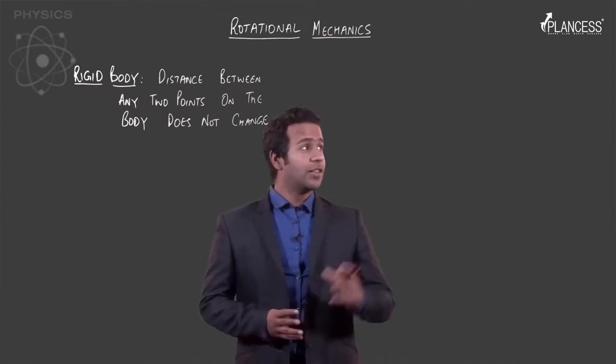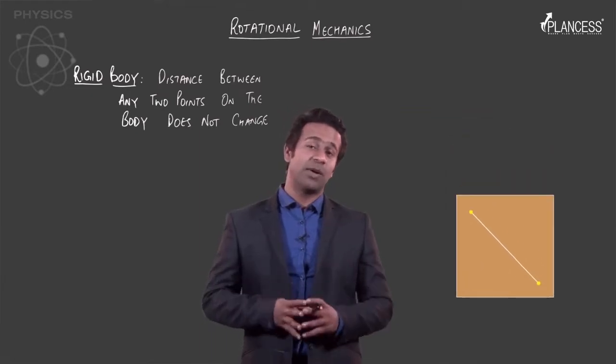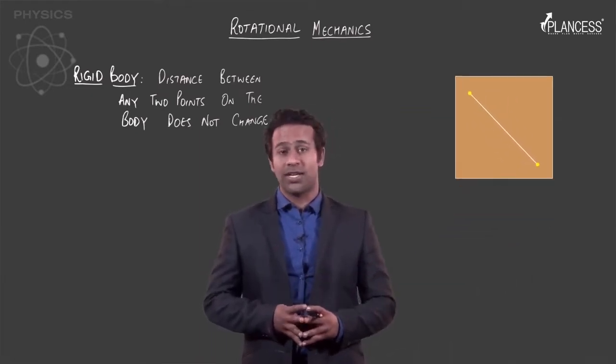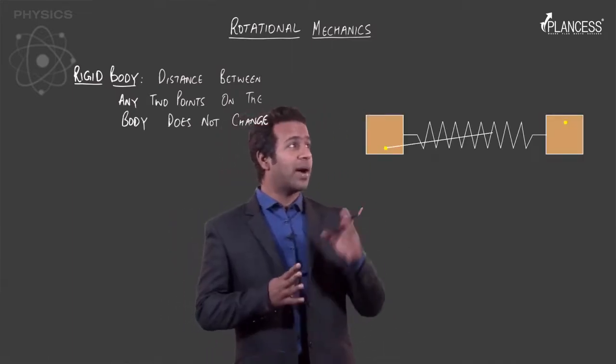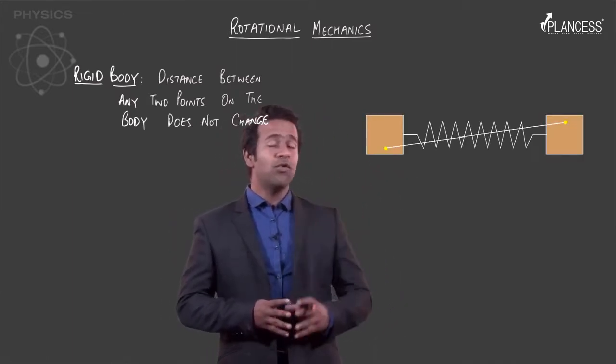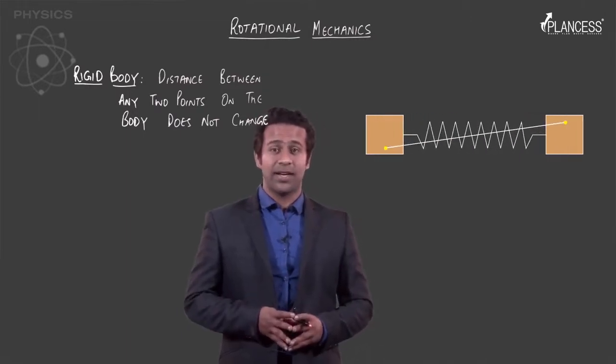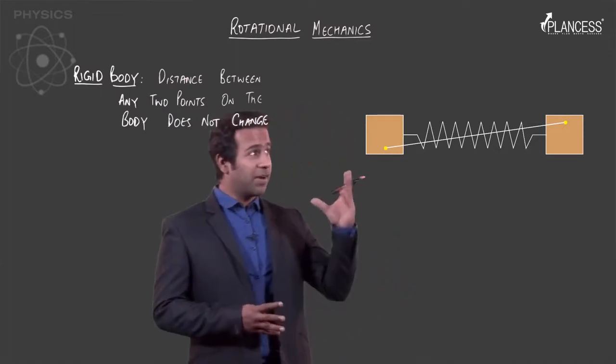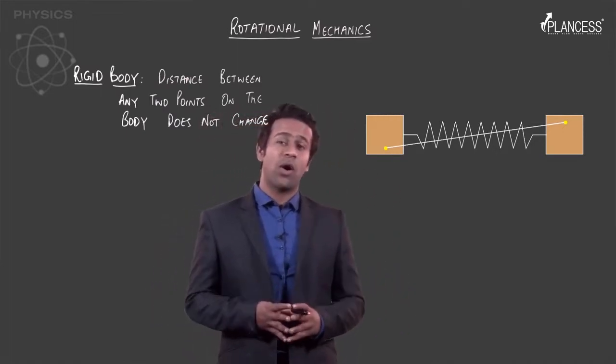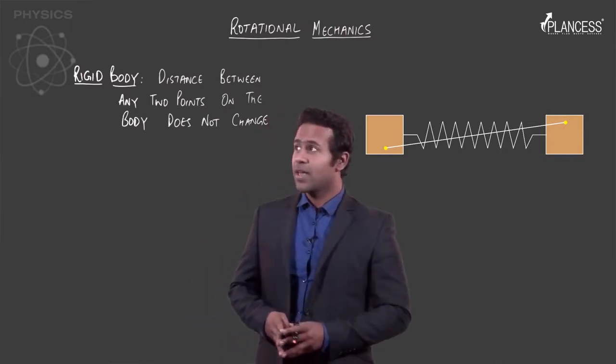Take a simple example. Think of a box. Now if you move this box, the distance between any two points would not change. But if we have two boxes combined through a spring, then during their movement, you can see that the distance might change. So this arrangement is not a rigid body, but the previous example where we had a single box, this is the case of a perfect rigid body.